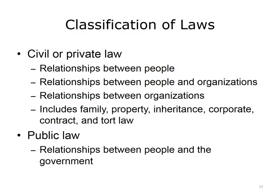The law has two major divisions: private and public. Private law is usually called civil law. It deals with relationships between people, between people and organizations such as businesses, and between organizations. There are many kinds of civil law — for example, family law concerns relationships between spouses or between parents and their children; property law involves disputes about the ownership of land. Contract law and tort law are discussed later in this lecture. Public law deals with the relationships between people and the government.